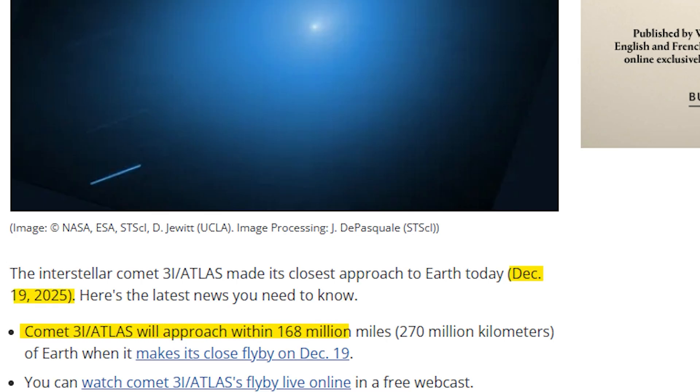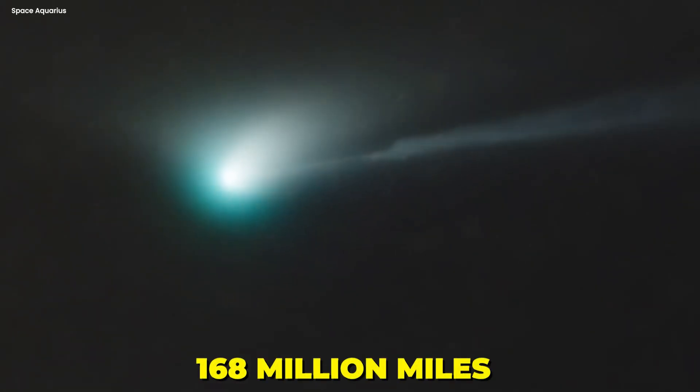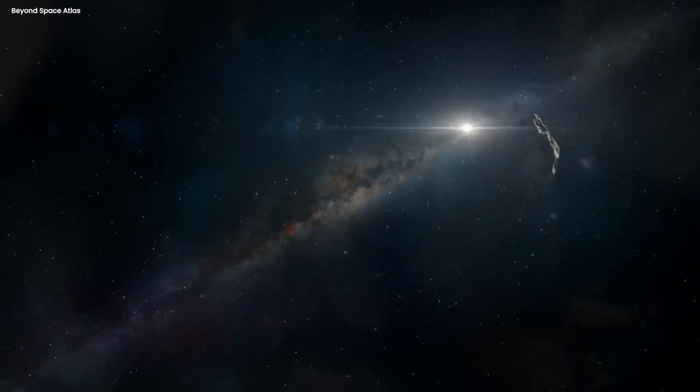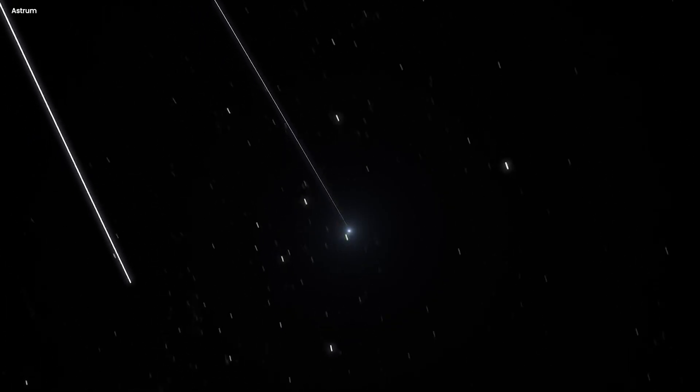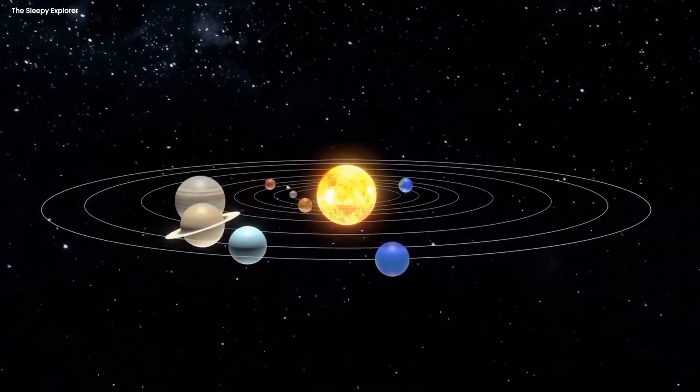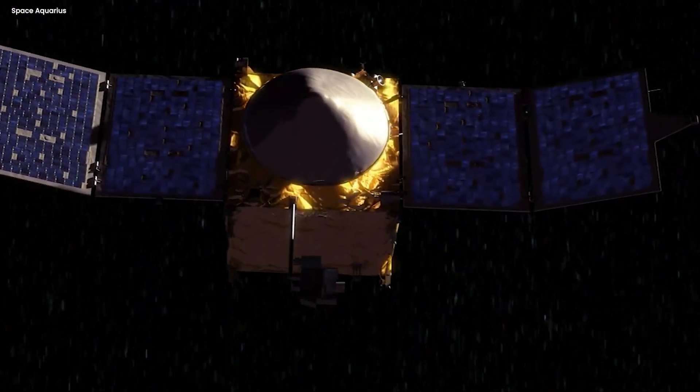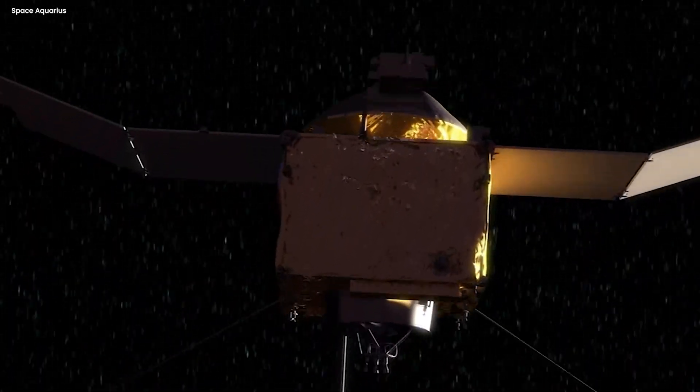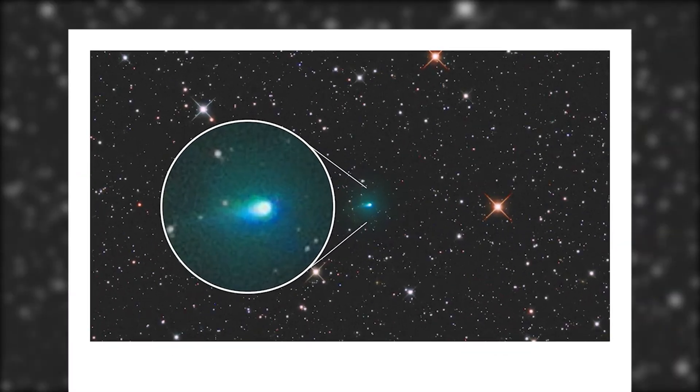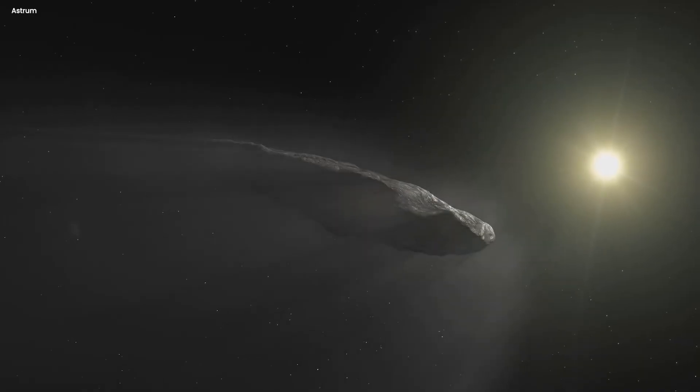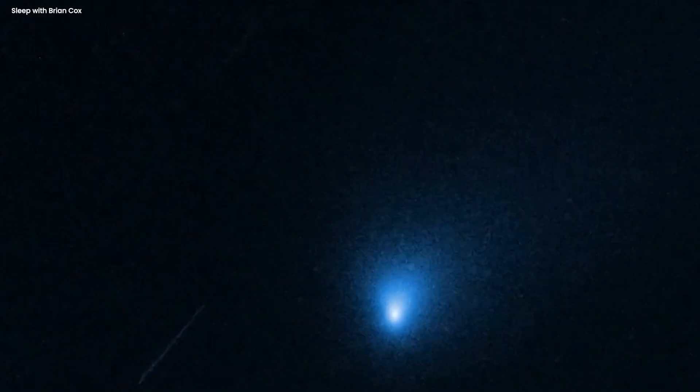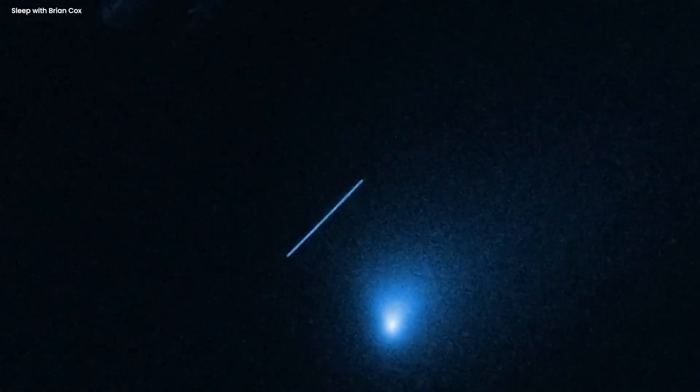And technically, December 19th was the day when the distance between our planet and this interstellar visitor reached its minimum. But here's the thing, the minimum distance was 168 million miles. That's further away than the Sun. And not only was it far away, but 3I Atlas was actually on the complete opposite side of the solar system from us. So while everyone on Earth was pointing their telescopes up at the sky, hoping to catch a glimpse of this mysterious object, it was hidden behind the bright light of the Sun. We couldn't see it. And more importantly, it couldn't see us.